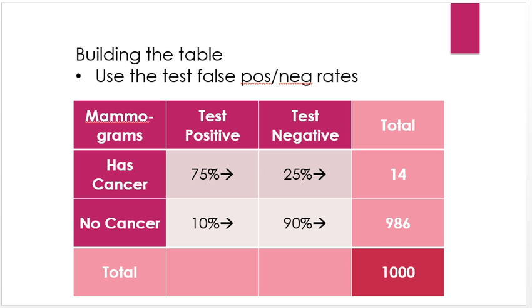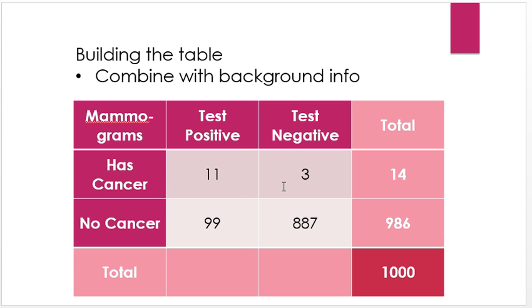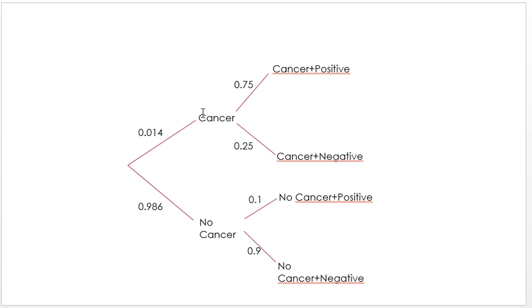I rounded to the nearest person, so it won't come out exactly, but: 11 people have cancer and test positive, 3 have cancer and test negative, 99 have no cancer and test positive — that's a pretty big number — and the vast majority, of course, don't have cancer and test negative. We filled in these numbers by working down the branches of the tree we actually do know. I think it's better to stay with the tabular presentation.